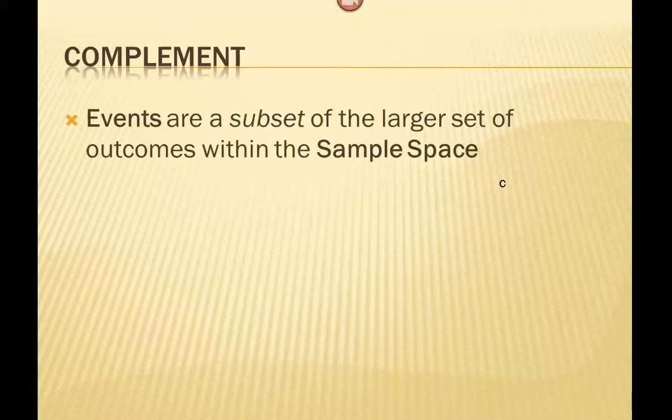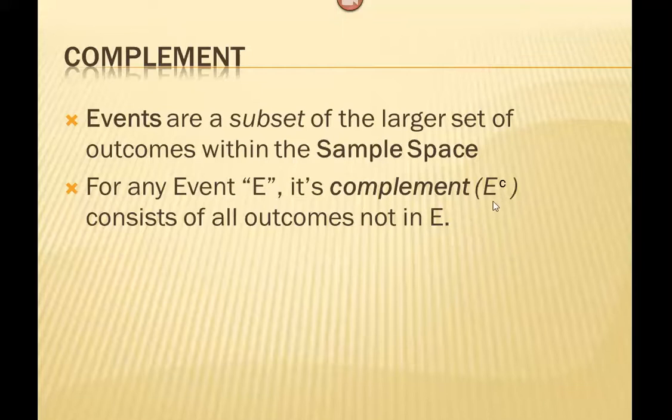This leads us into our first rule, which is a very important and useful rule as we go forward, called the complement rule. Since events are a subset of the larger set of outcomes within our sample space, for any event E, its complement we represent with E^C. Sometimes you'll see it represented with not E. If we have an event E, its complement would be that E does not occur. It consists of all the outcomes that are not in the space for our event.